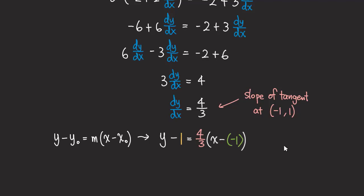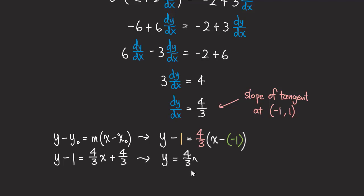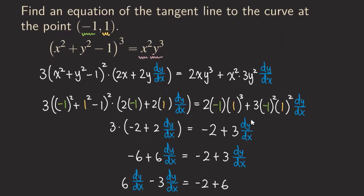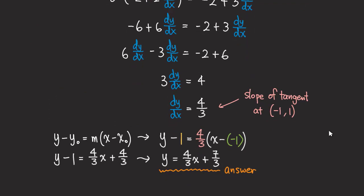Simplifying to slope-intercept form: distribute 4/3 to get y - 1 = (4/3)x + 4/3. Adding 1 (which is 3/3) to both sides: y = (4/3)x + 4/3 + 3/3 = (4/3)x + 7/3. That's our final answer — the equation of the tangent line to this curve at this point. That's it for this problem. I'll see you next time, thank you for watching.